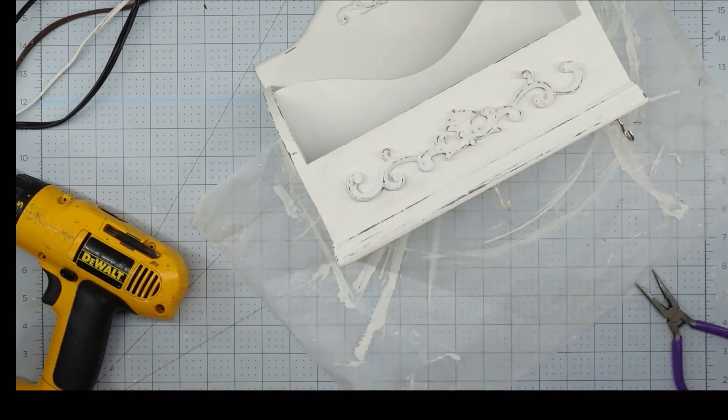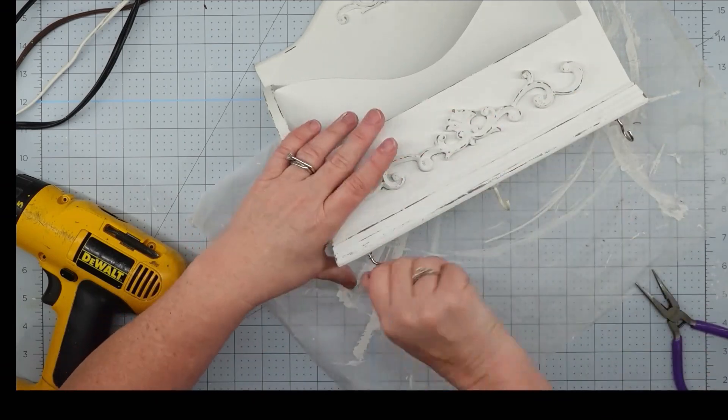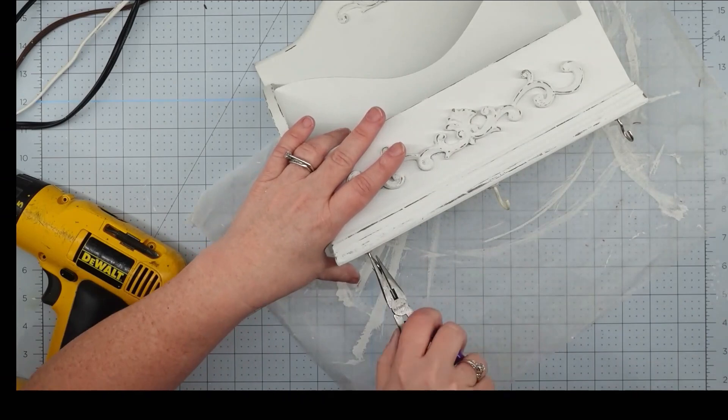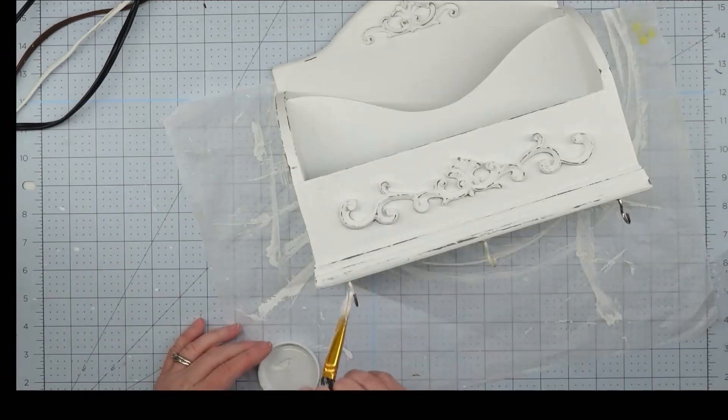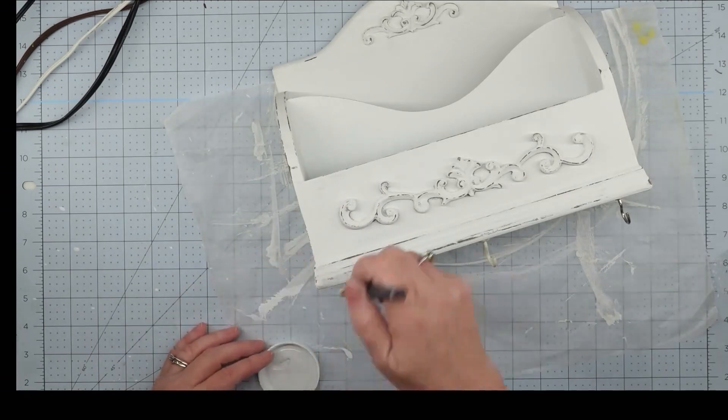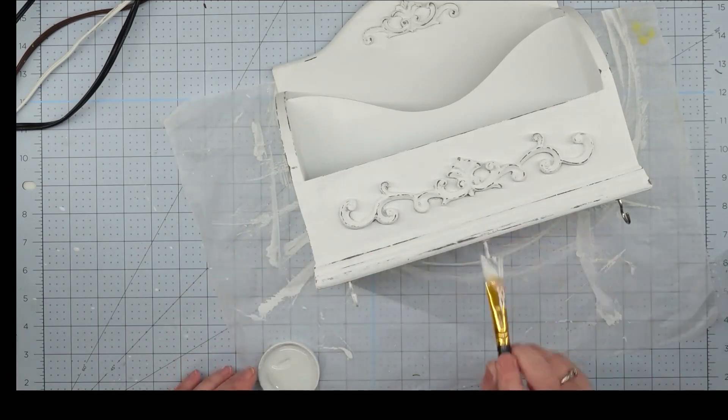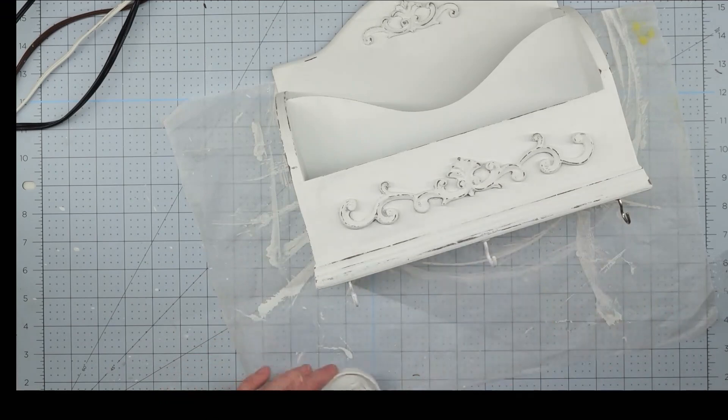Now I didn't have three cup hooks that were the same color, but that's okay, because once I got these in, I just took some of my Waverly white chalk paint and I'm going to paint over them. This is going to blend it in with the piece and make it all look the same. Once you do this and the paint is dry, this project will be complete.